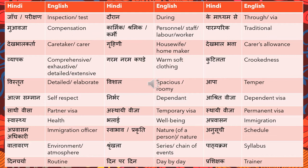Kutilta means crookedness. Vistrit means detailed or elaborate. Vishal means spacious or roomy. Aapa means temper. Atma samman means self-respect — samman is respect, so atma samman is self-respect. Nirbhar means dependent. Ashrit visa is dependent visa. Sati visa is partner visa.